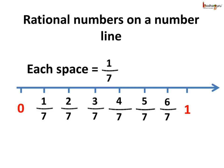Let us see how to compare the rational numbers 5 by 7 and 2 by 7. Well, 5 by 7 lies on the right hand side of 2 by 7, and hence we can say 5 by 7 is greater than 2 by 7.